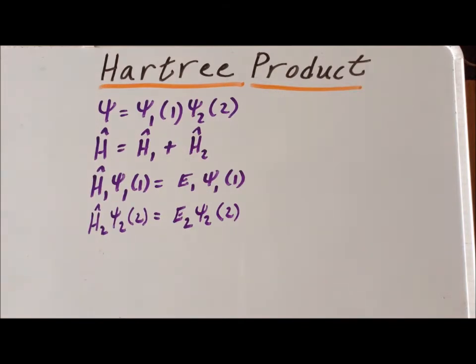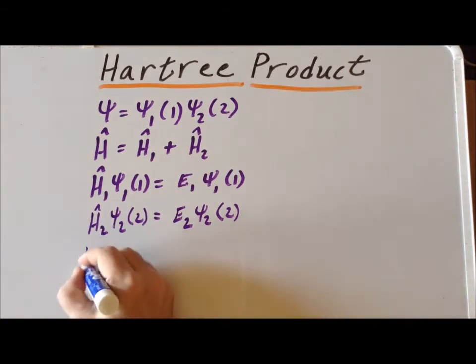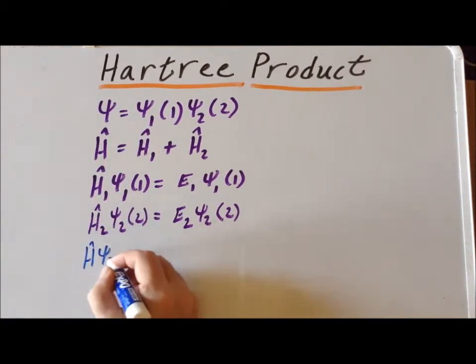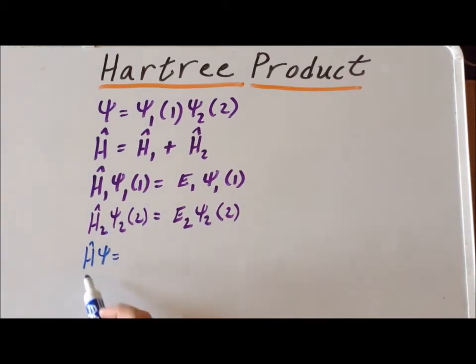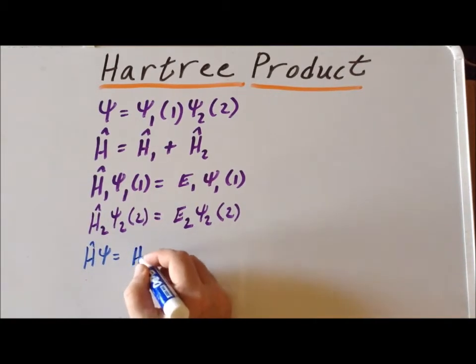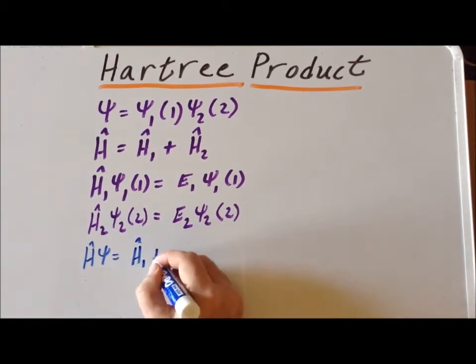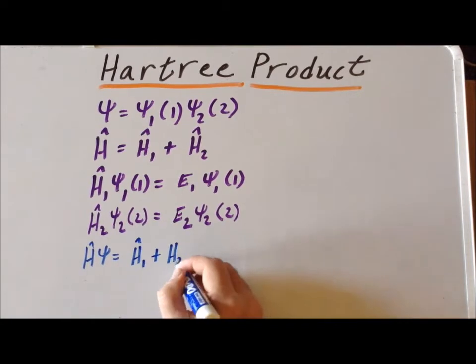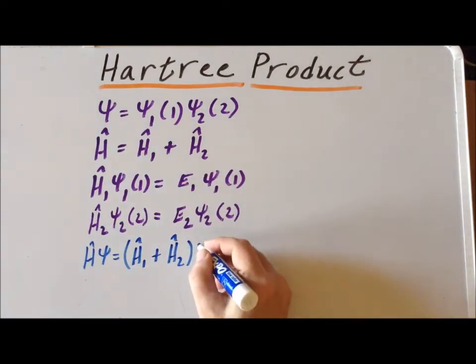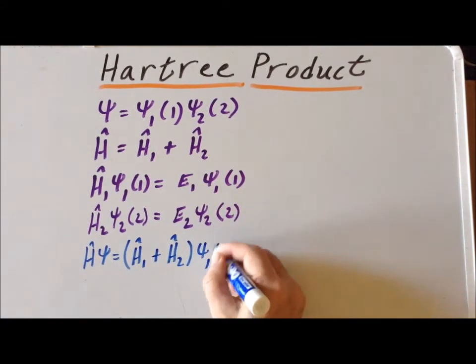So now we want to have the overall operator, the Hamiltonian, act upon our function number 1. So what we do now is we replace our Hamiltonian by the sum, which is Ĥ₁ plus Ĥ₂, acting on our wave function, which is merely this product, ψ₁ of 1 times ψ₂ of 2.